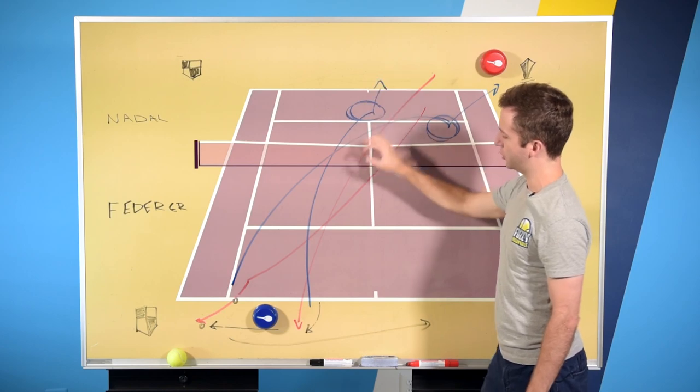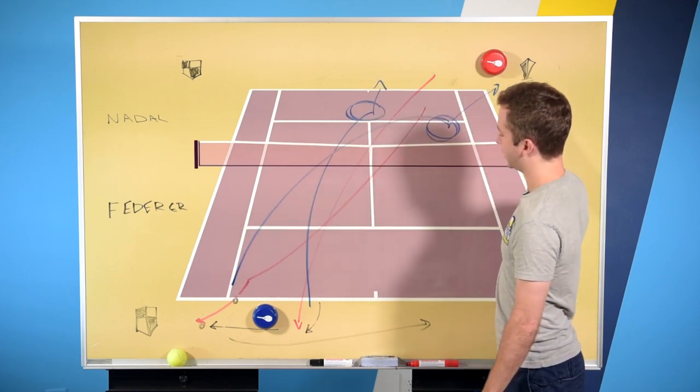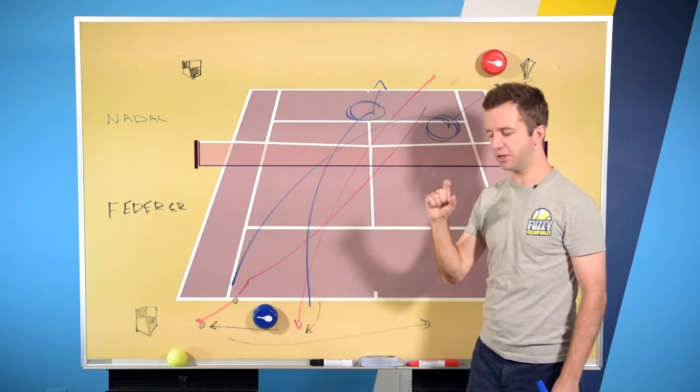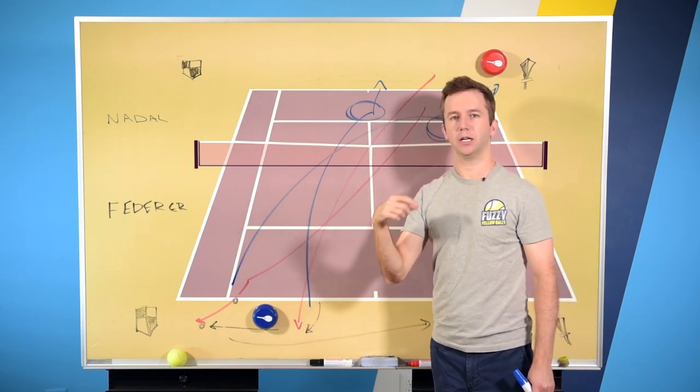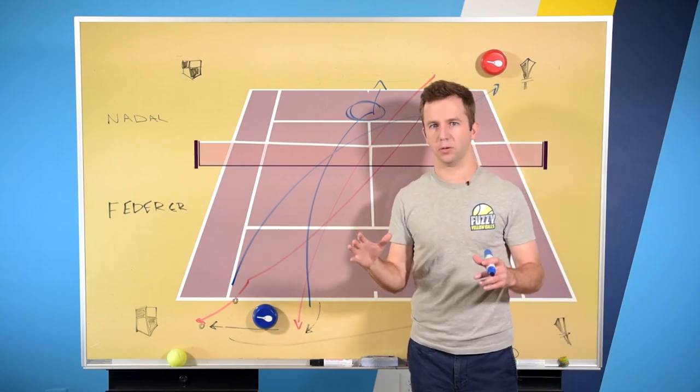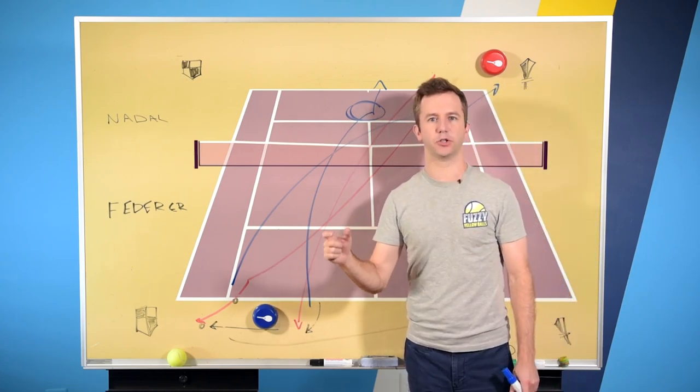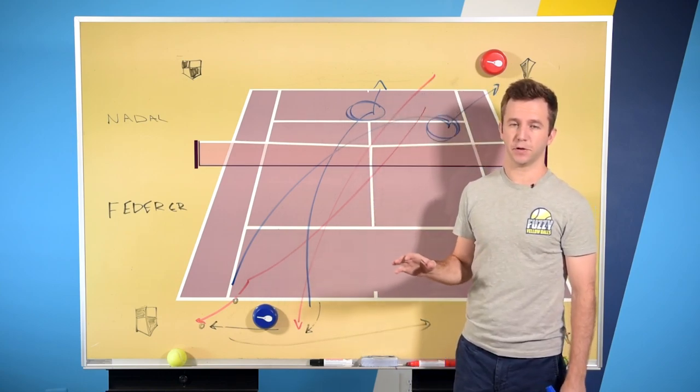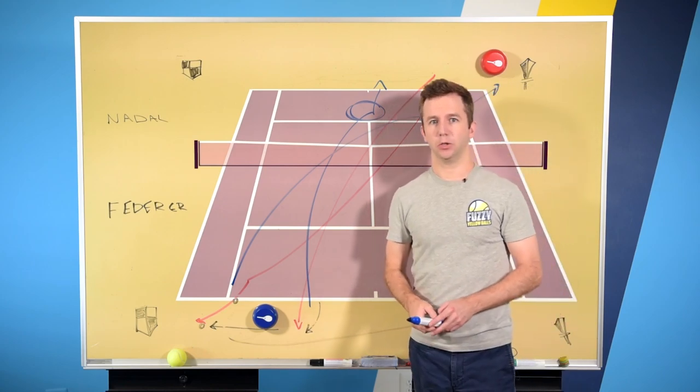Now, both of these backhands, whether it's through the court and particularly the one angled like this, are not high percentage shots. They're low percentage shots, but he's still going to improve his percentage a little bit over slicing the ball. And at this level, at the pro level, that's all you need. You need a couple extra points because the margins are so narrow. Just like one percentage point even can make the difference between winning and losing.